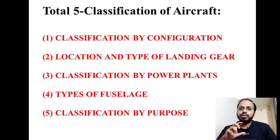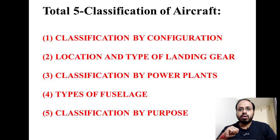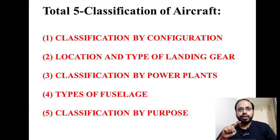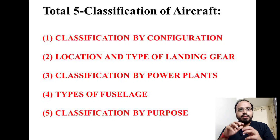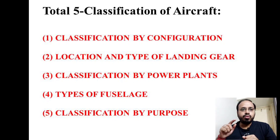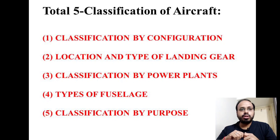The topic is classification of aircraft. There are five total classifications related to aircraft. The first one is classification by wing configuration. The second one is location and types of landing gear. Third one is classification by power plants. Fourth one is types of fuselage. And fifth one is classification by purpose.